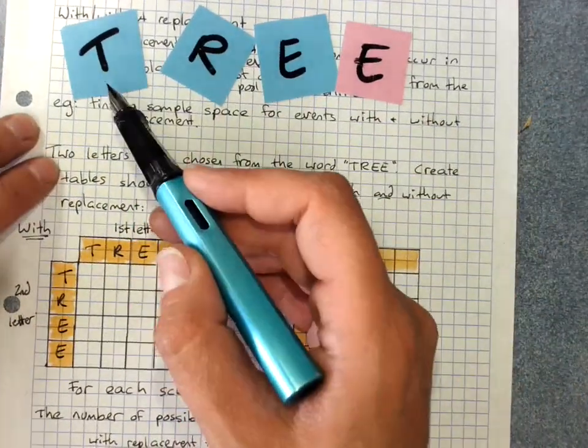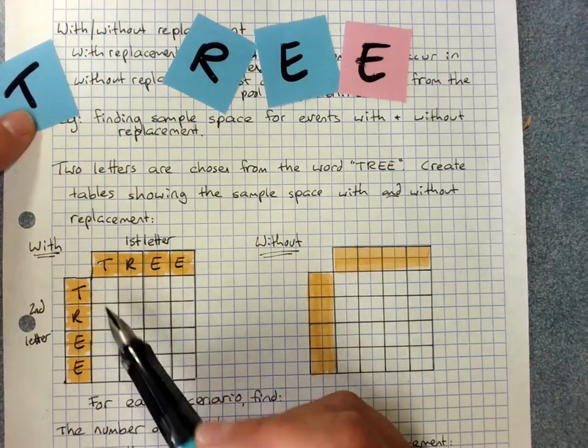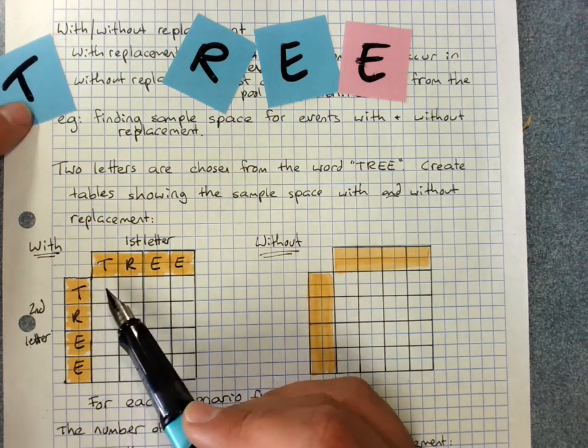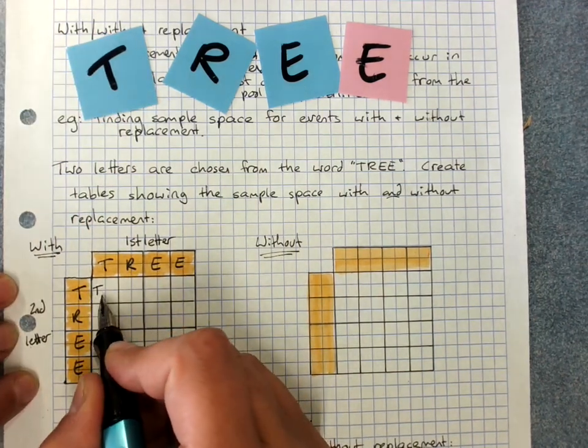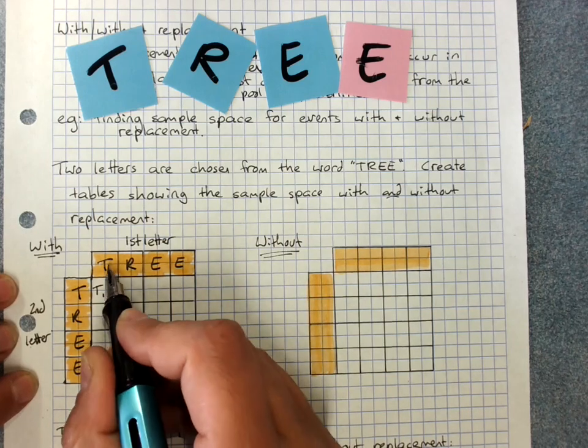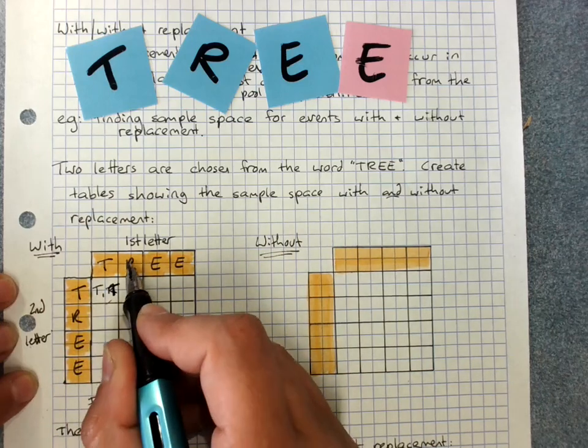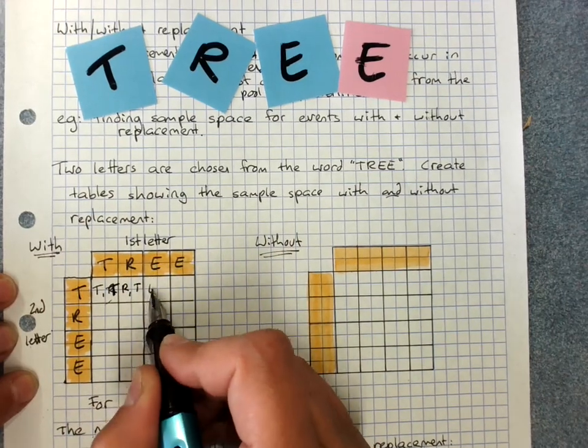Now, if I chose a T for my first letter, that goes in this column, but because it's with replacement, it's still quite possible to get a T for the second letter. So my possible outcomes are T, T. Here it's R for the first one, T. E for the first one, T.